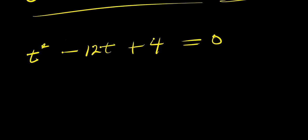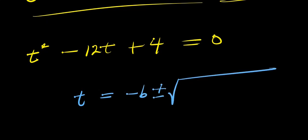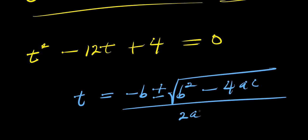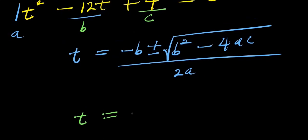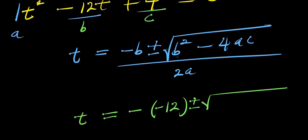Now let's solve using the quadratic formula: t equals negative b plus or minus square root of b squared minus 4ac, divided by 2a. Here the coefficient of t squared is 1, so a equals 1; the coefficient of t is negative 12, so b equals negative 12; and c equals 4.